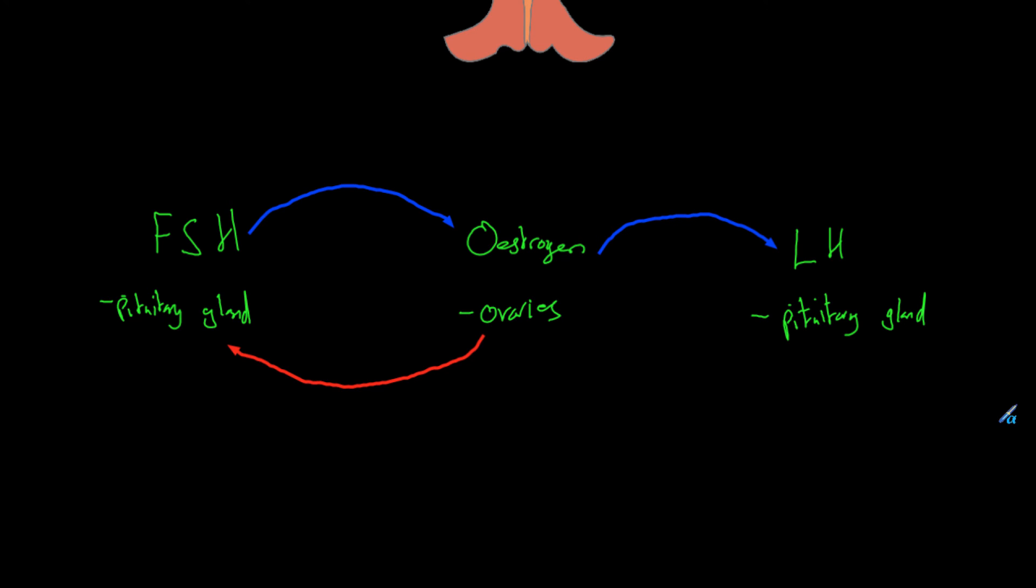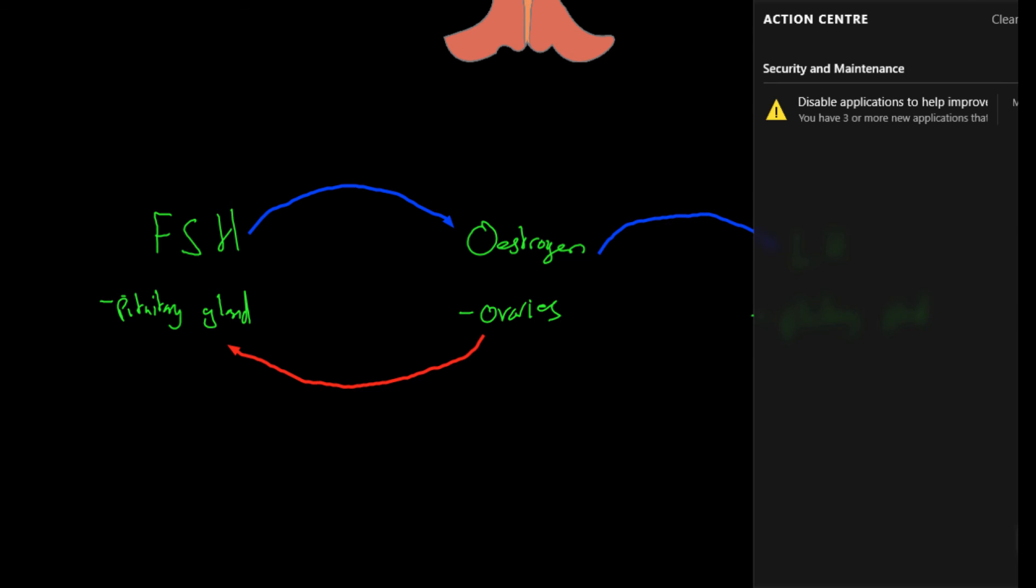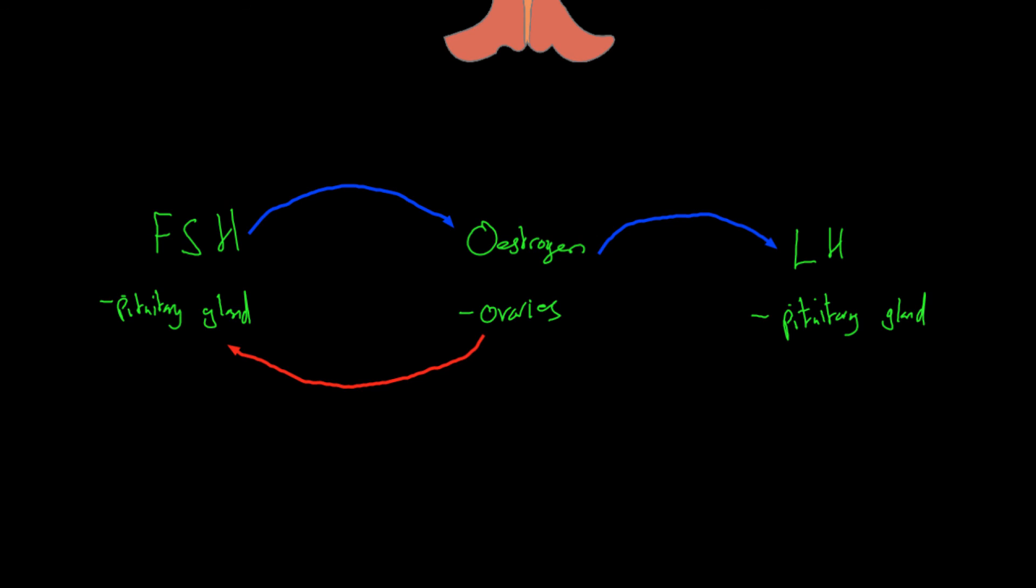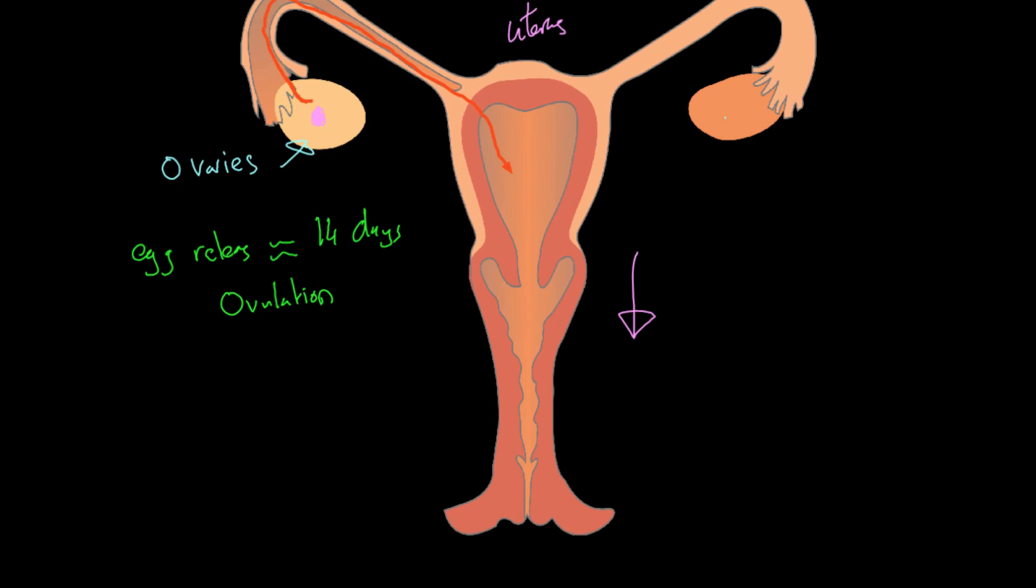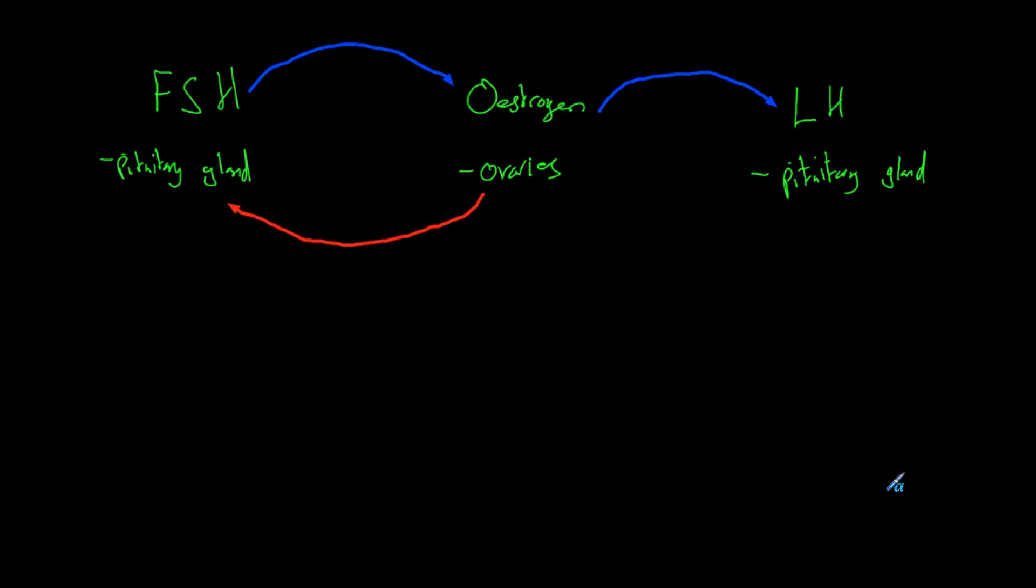If, however, the egg is not fertilized after a while, and we're going to say around about 26 to 28 days, then the womb lining and the egg, which has not been matured, will be flushed out. So they'll be flushed out. And that is known as the period or the monthly bleed.